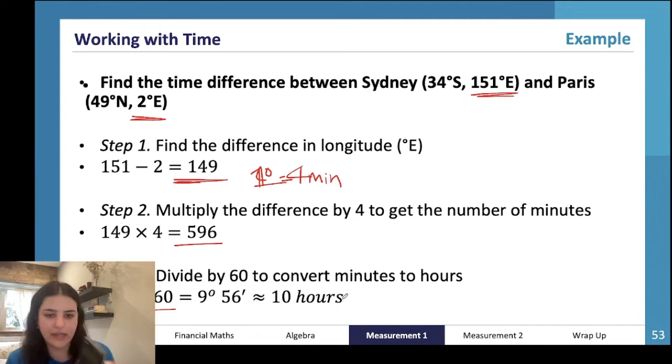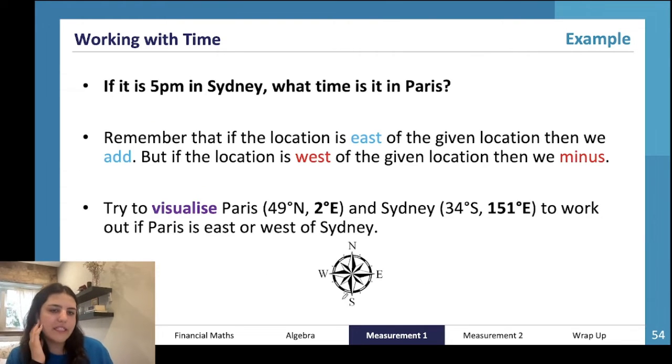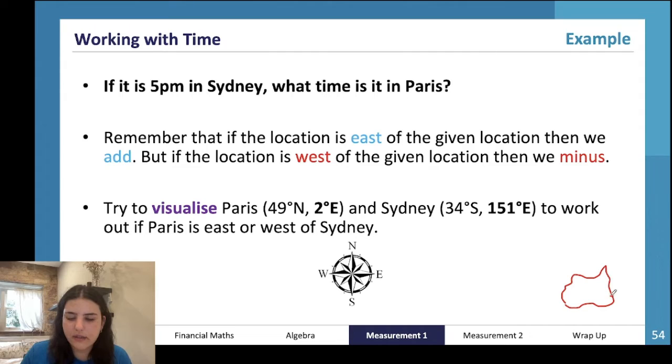If it is 5 p.m. in Sydney, what time is it in Paris? Remember, the location is east we add, west we minus. Paris is behind Sydney. I actually draw a little map in my head - a very dodgy drawing of Australia, this is Sydney, and then we've got Paris right up here in France. This is the UK, and this is Spain to the side - this is all Europe up here.